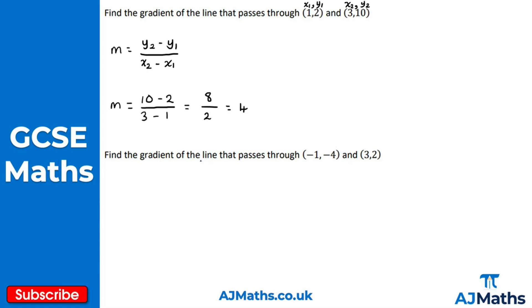Moving on to the next example, again I want to find the gradient of the line that passes through these two points. We use the same formula: m is equal to y2 minus y1 over x2 minus x1. I'm going to pick this as x1 and y1, and this will be x2 and y2.